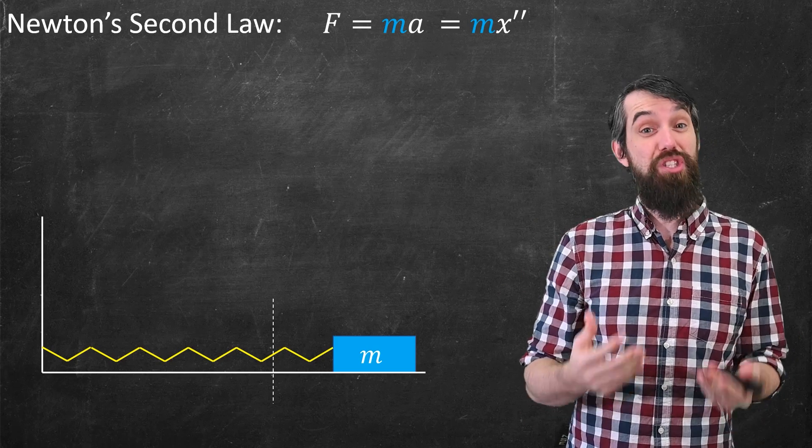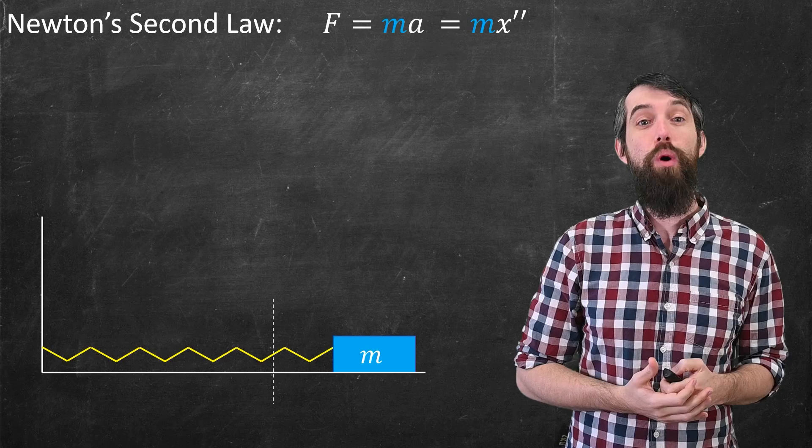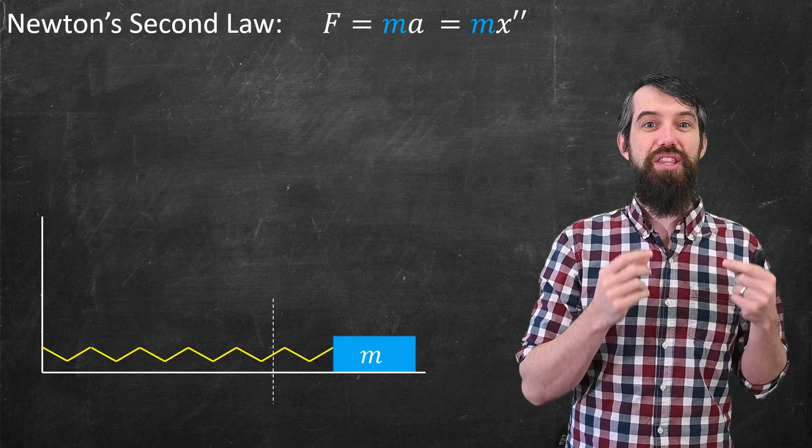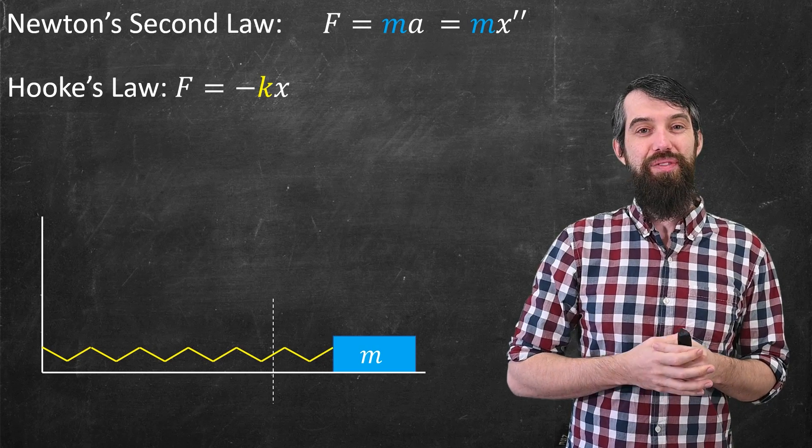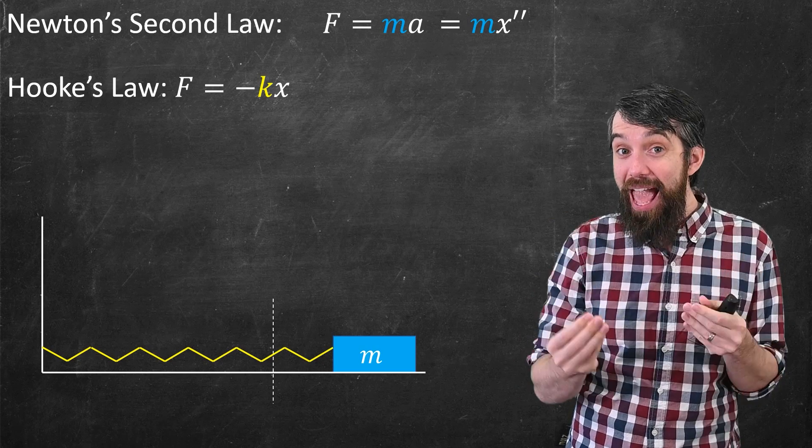Now the only force that's relevant, because I'm assuming it's frictionless at the beginning, is what we call Hooke's law. And Hooke's law gives us the force of the spring acting on the mass. And the idea is it's negative k times x, where k is just some constant.